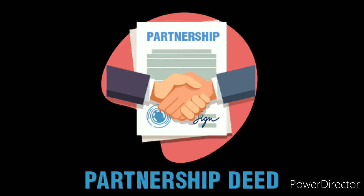The partnership deed must be in written format. The deed covers many items such as the name of the firm, its location, objectives of the business, profit and loss sharing ratio, interest on capital, interest on drawings, and interest on partners' loans. Everything should be mentioned in the deed. You can refer to T.S. Grewal's book for more details.